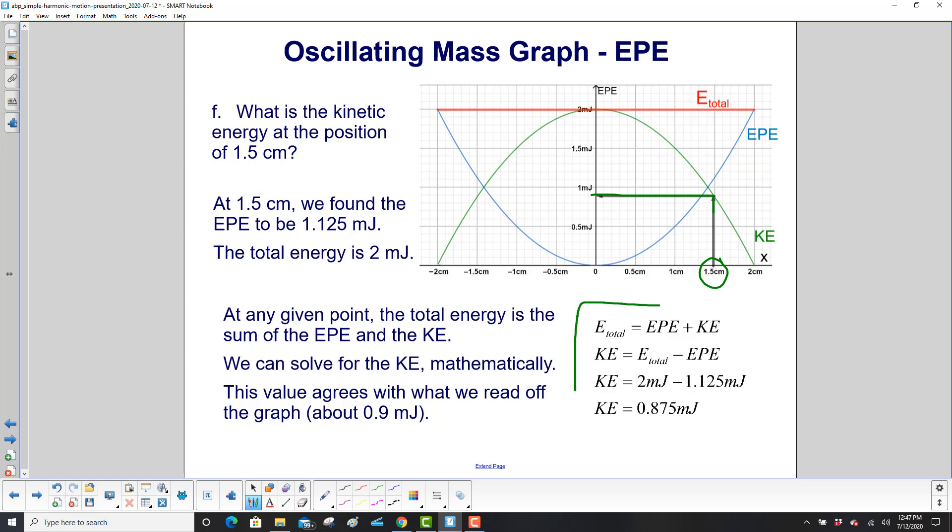Or use this. We already found the EPE. Now we know the kinetic energy is going to be the total energy minus the EPE. So we have 2 millijoules minus the 1.125 millijoules that we calculated, and the kinetic energy is 0.875 millijoules. And that's pretty close to the 0.9.